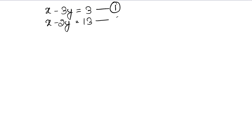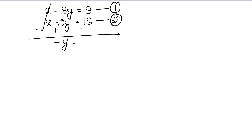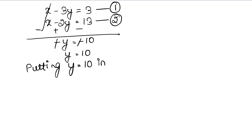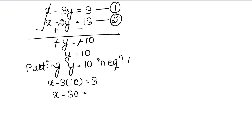To solve these, notice that the coefficients of x are the same and the signs are the same, so we subtract one equation from the other. This gives minus y equals minus 10, so y equals 10. Putting y equals 10 into equation 1: x minus 3 times 10 equals 3, so x minus 30 equals 3, giving x equals 33.